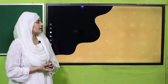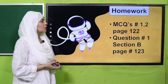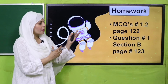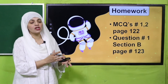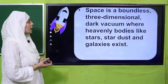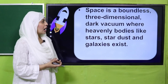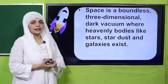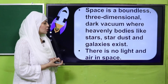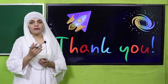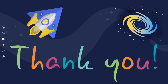I hope everybody has completed the worksheet. For homework, you will do MCQ number one and two given on page 122, and you will also do question number one from section B on page 123. In today's lecture we learned that space is a boundless three-dimensional dark vacuum where heavenly bodies like stars, stardust, and galaxies exist, and there is no light or air in space. Have a good day — Allah Hafiz!